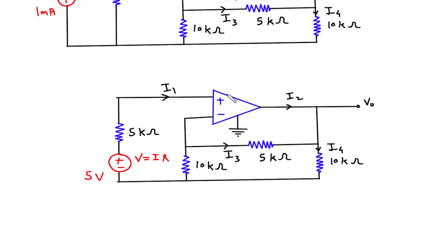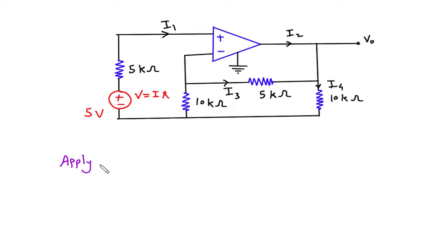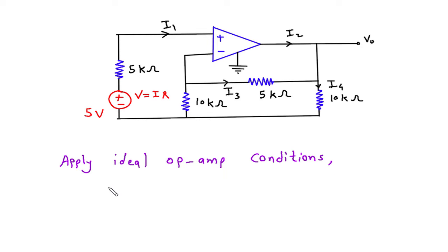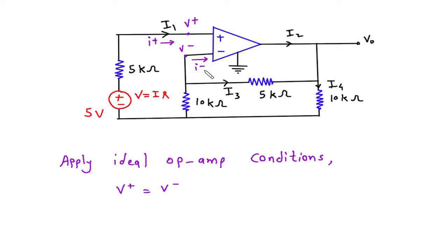Now we will apply ideal op-amp conditions. The ideal op-amp conditions are: let's assume this is voltage V positive and this is voltage V negative, this is current I positive and this is current I negative. The first condition is V+ equals V−, and the second condition is I+ equals I− equals zero.